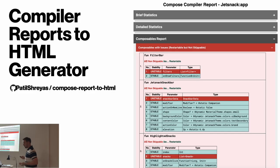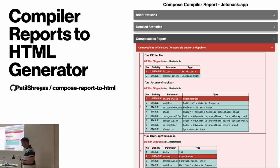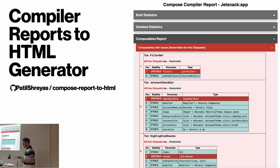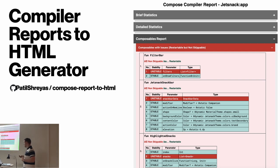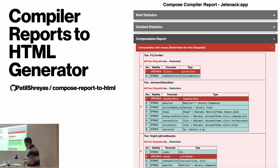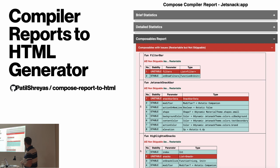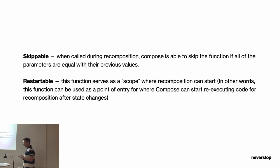Thankfully, thanks to the awesome Android community, you can find parsers for these reports. The best one I found takes all the files and generates a great HTML that you can navigate. Here you will see data like whether parameters are stable, and whether the function is restartable and skippable. Let's see what those mean.